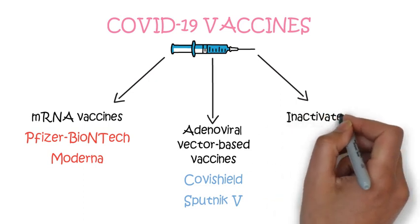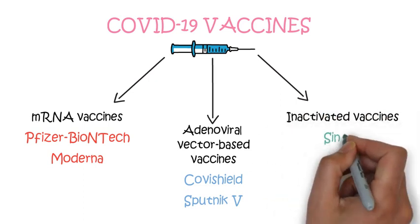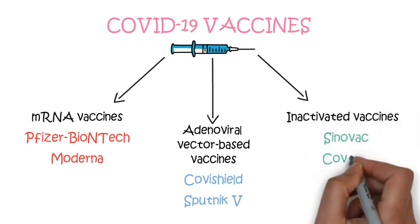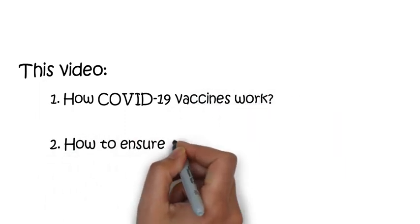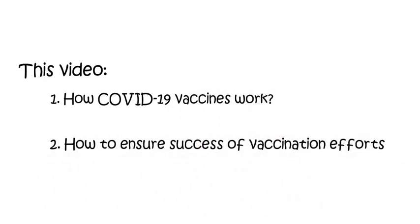While some are inactivated vaccines such as China's Sinovac and Bharat Biotech India's Covaxin. In this video, we will explain in short how these vaccines work and how we can ensure that the current vaccination efforts are successful.